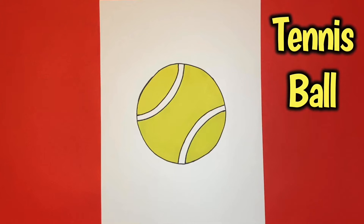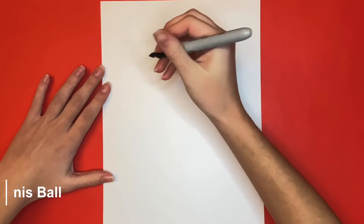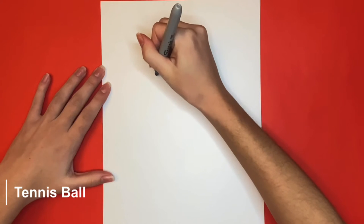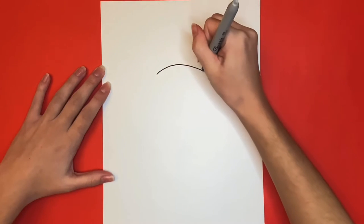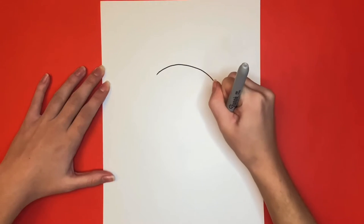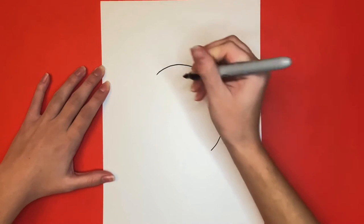How to draw a tennis ball. We're going to start out by drawing a big circle in the middle of our page. If you want to make a perfect circle, you might want to use a cup or something to trace to help you with that.